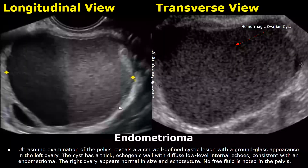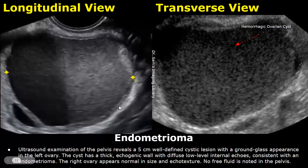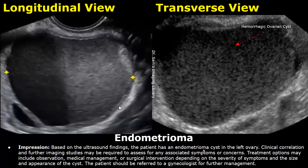For endometrioma, in the findings you must mention the ground glass appearance of the ovary. Then you can write: the cyst has a thick, echogenic wall with diffuse low-level internal echoes, consistent with an endometrioma. After that you can write about the other ovary. In the impression, you must mention the endometrioma, followed by clinical correlation, and you can write about treatment options.